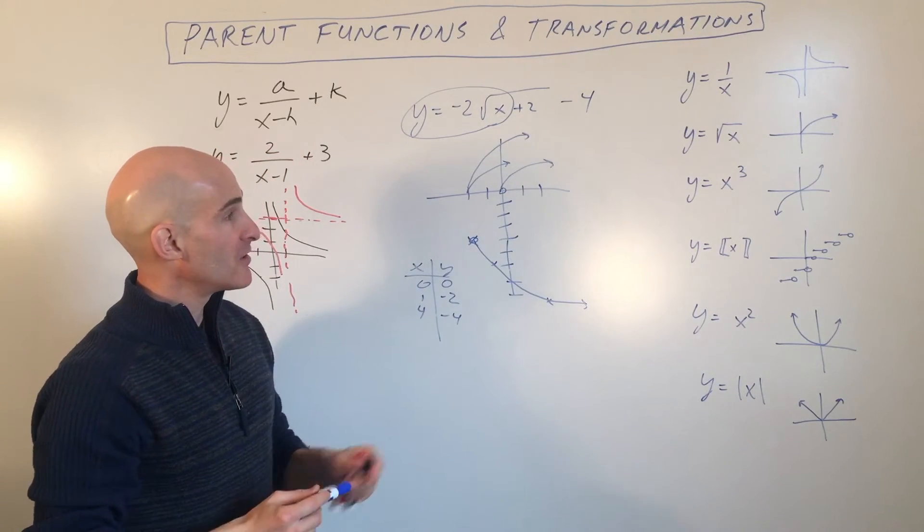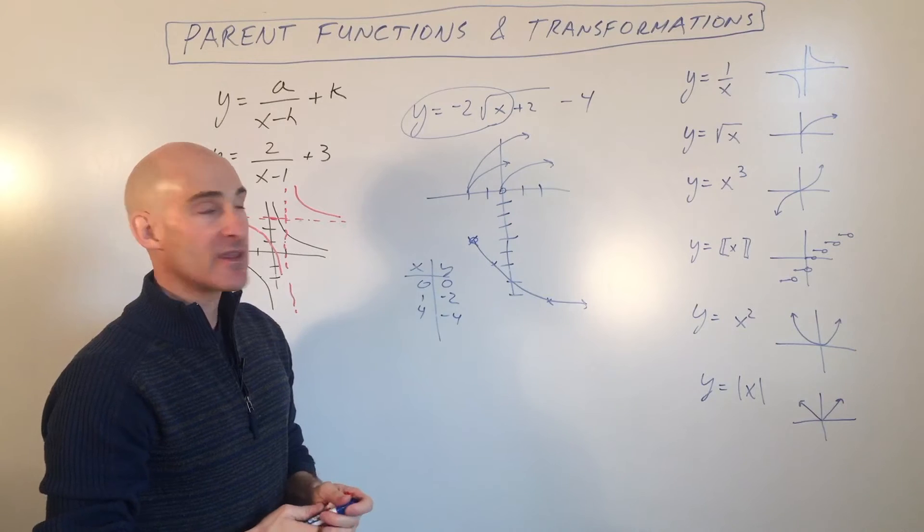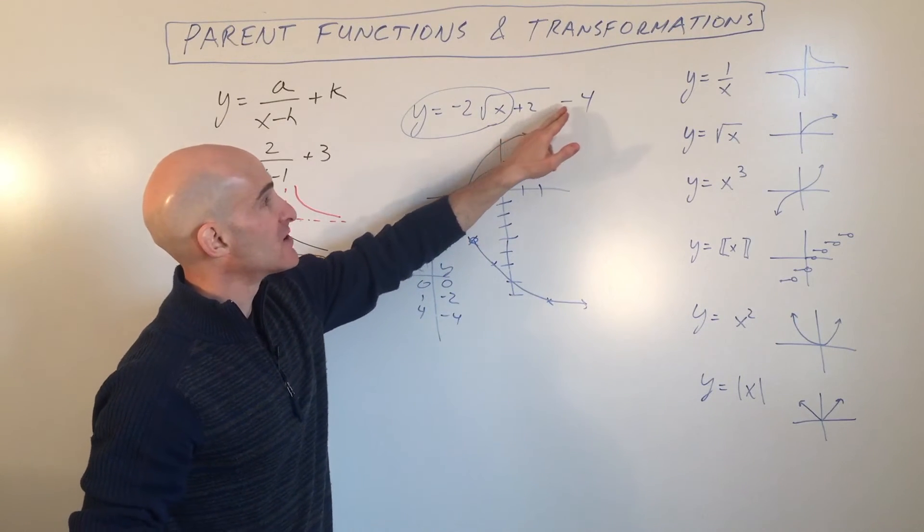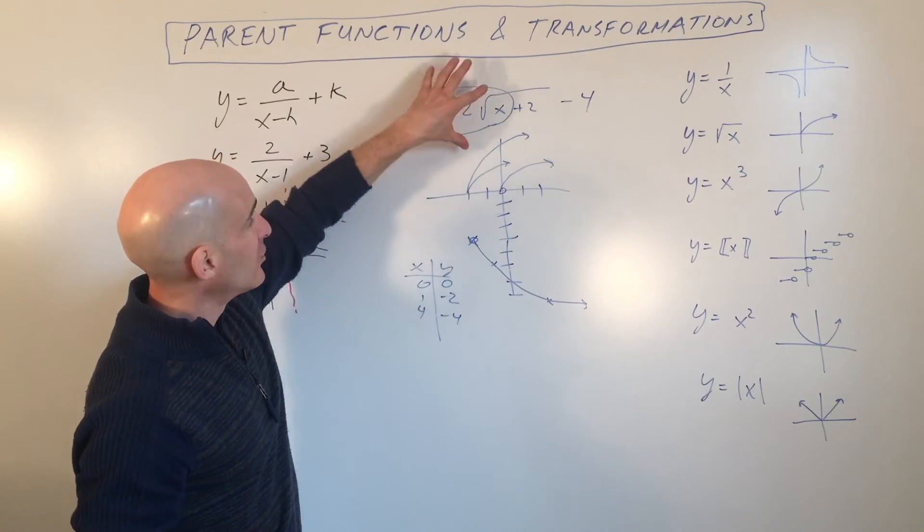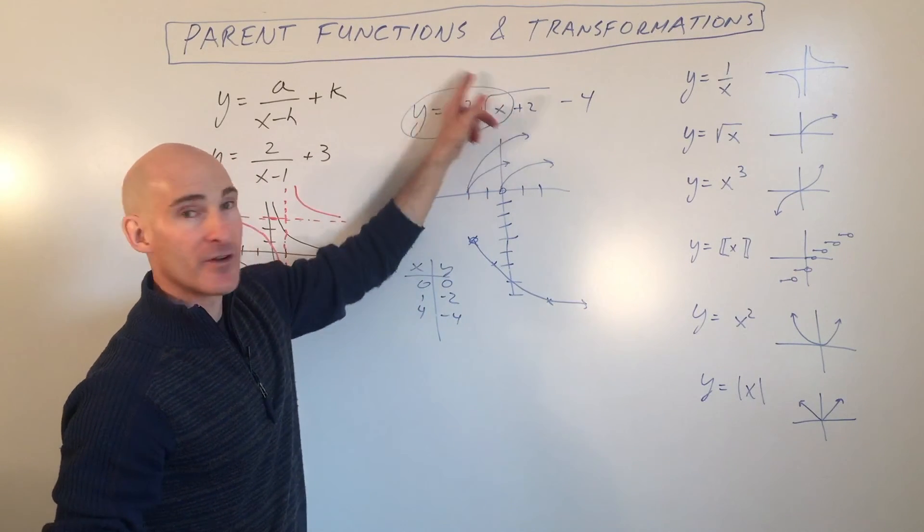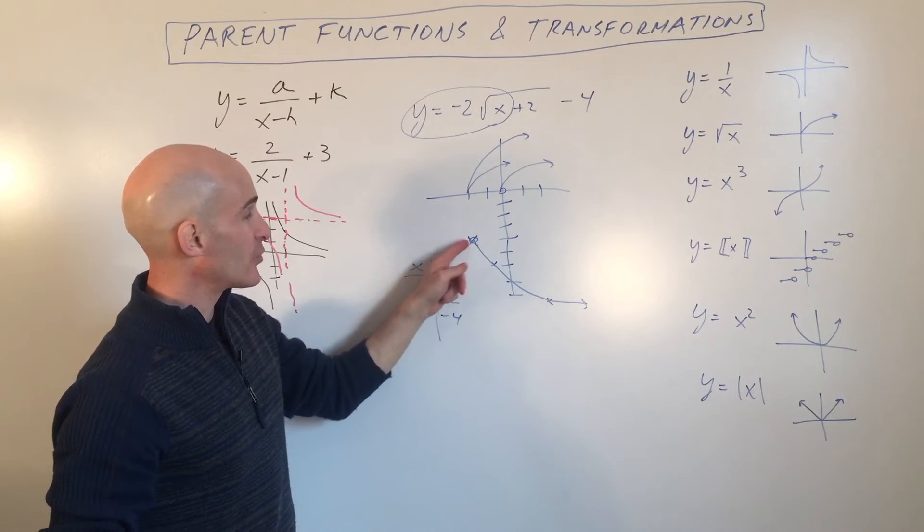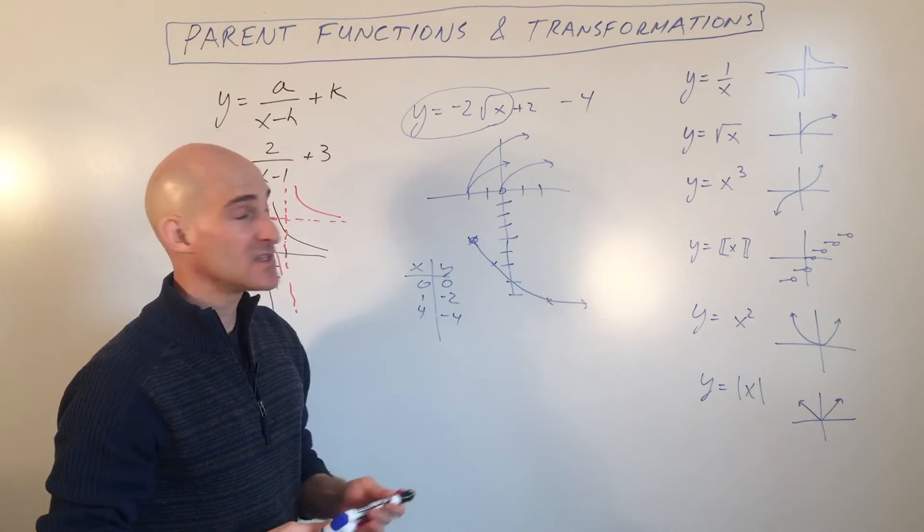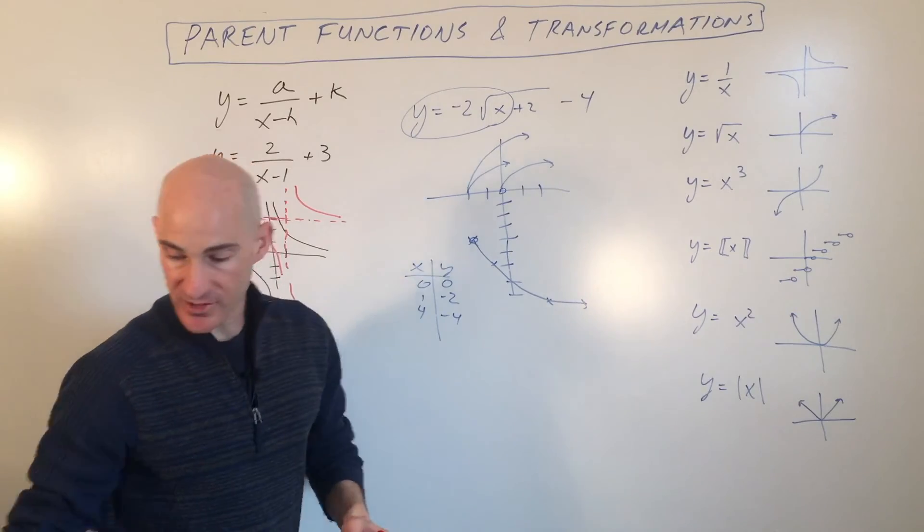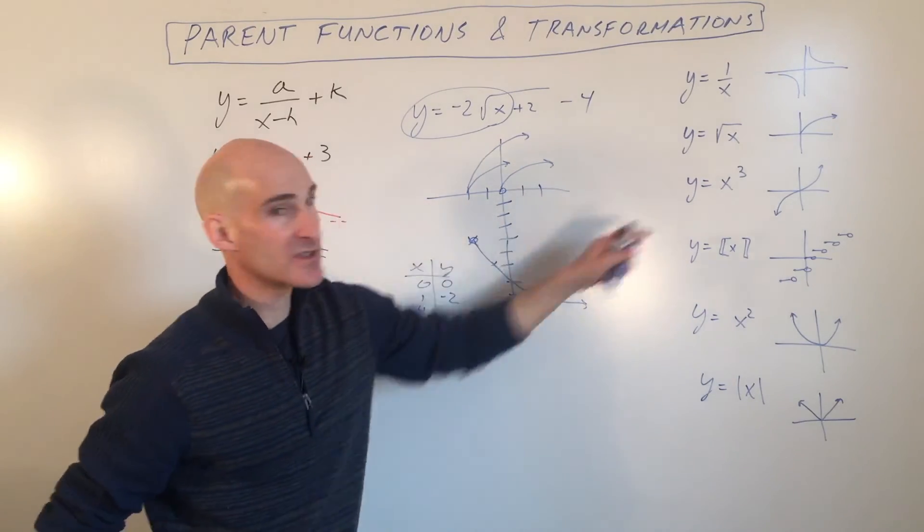But as far as graphing is concerned, I would use the method that I just showed you. I would consider the translation, the shift first. Think of that as your starting point. Look at what the remainder of the function and graph that. Make a table and graph it from that new starting point. And that's a quick and easy way to get the graph. I'll show you another example. Let's pick another one. Let's take y equals x cubed this time.